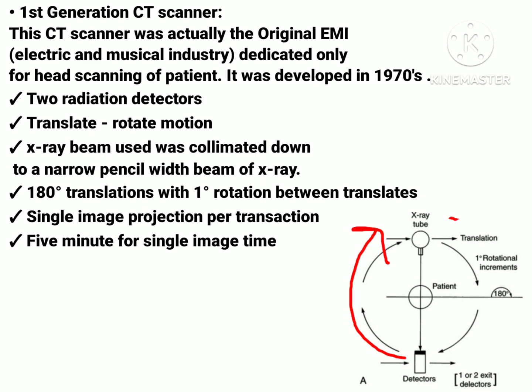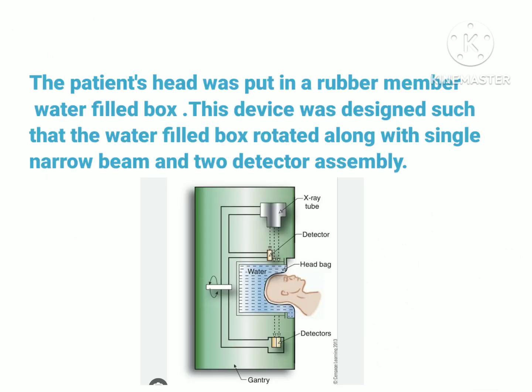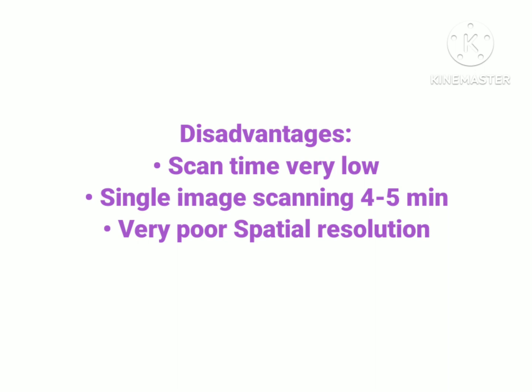In one translation, one single image is being projected. In this EMI CT scanner — the first generation CT scanner — the patient's head is put into a rubber membrane inside a water-filled box. You can see how the patient's head is placed into the water-filled box. This device was designed such that the water-filled box rotates along with the single narrow beam and two-detector assembly.